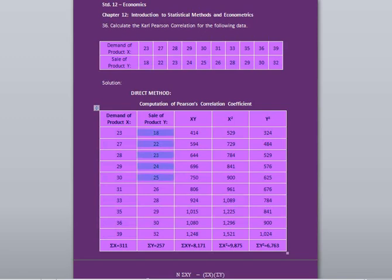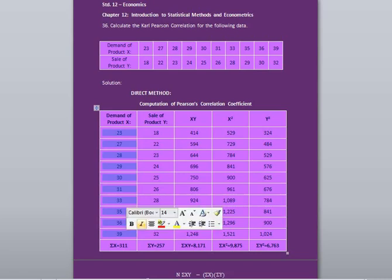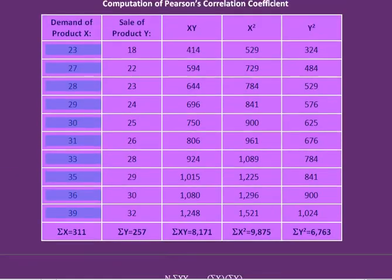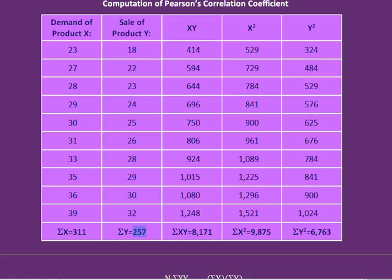In the next column, copy the sale of product Y values: 18, 22, 23, 24, 25, 26, 29, 30, 32. Before calculating XY, first add all the X values, which gives 311 — so Sigma X equals 311. Then add all the Y values; the total is 257, so Sigma Y equals 257.